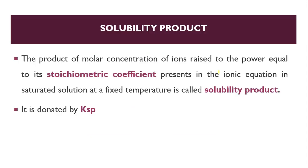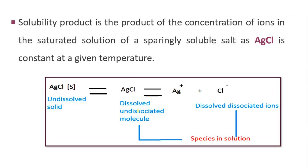The solubility product is the product of molar concentrations of ions, each raised to the power equal to its stoichiometric coefficient in the ionic equation, in a saturated solution at a fixed temperature. It is denoted by Ksp, where 'sp' stands for solubility product and 'K' stands for equilibrium constant.